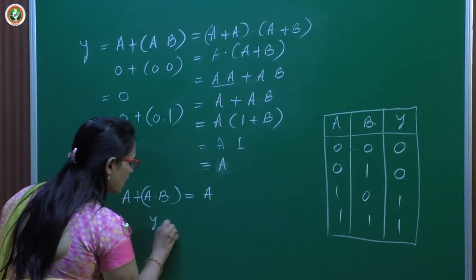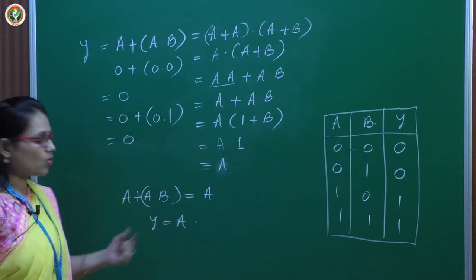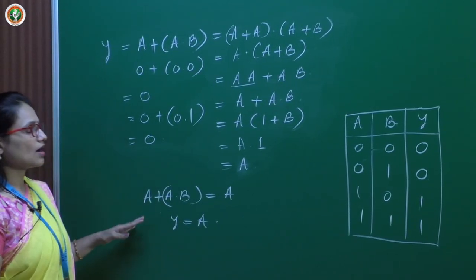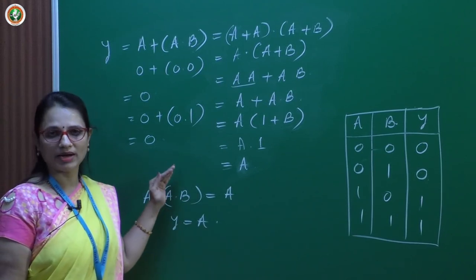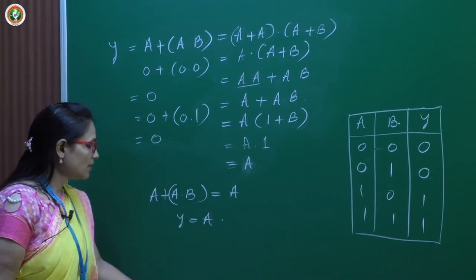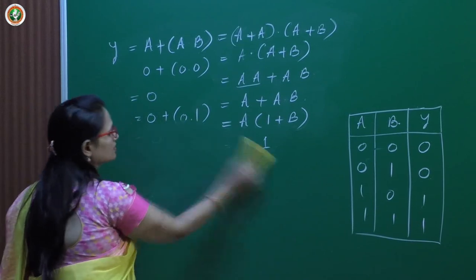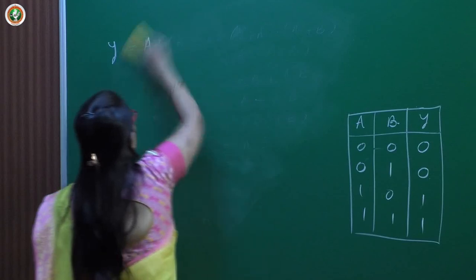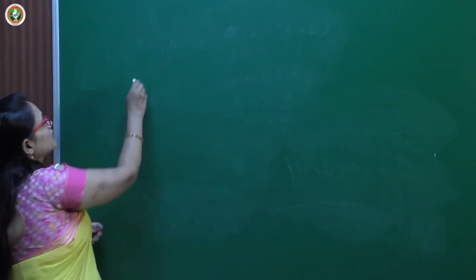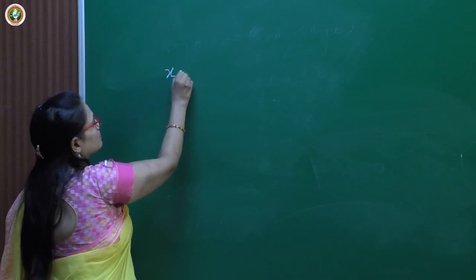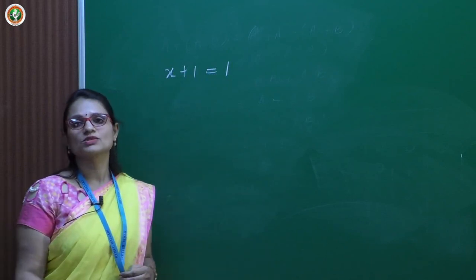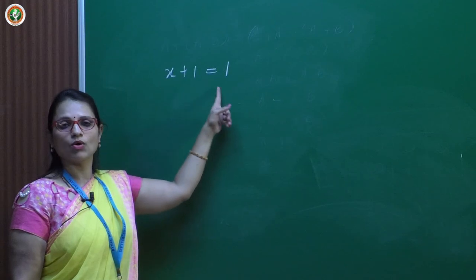If you observe this truth table and look at the column for A and the column for Y — aren't the values in those two columns the same? Yes. Whenever any two columns have the same values for all input combinations, they are equivalent. So Y, which is A plus A into B, is equivalent to A. This is how we can provide proof for any given expression: either by the simplification method or by using the truth table. Now let us look at another example — how to prove the identity theorem x plus 1.